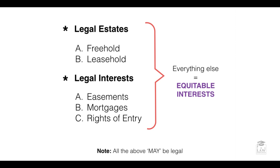Things which do not fall under either of those categories become equitable. This is the easiest way to define and delegate which rights remain legal and which remain equitable. It must be noted, however, that not everything is as clear-cut, because the categories mentioned as legal estates and legal interests represent the best-case scenario — it is ultimately up to the court to decide.